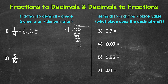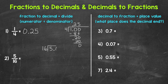So 0.25 — one fourth equals 25 hundredths. Let's move on to number two, where we have five sixteenths. So we need to do five divided by 16. How many whole groups of 16 in five? Well, we can't do that, so we need a decimal and then a zero.